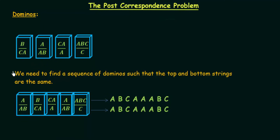Here is the solution to this set of dominoes. You should always start with a domino in which the first symbol on top and the first symbol on the bottom are the same; otherwise we cannot form a matching string from the start. The first domino has B on top and C on the bottom — not the same. The third and fourth dominoes also don't match. So we are left with only the second domino, A over AB, where the first top symbol and first bottom symbol are both A. So this is the first domino I will use.